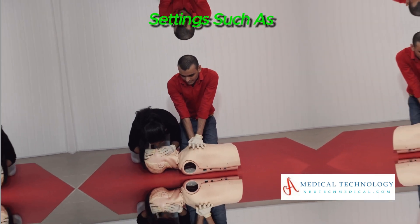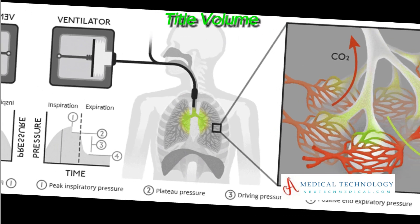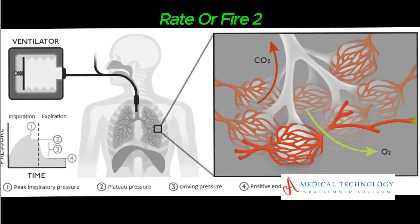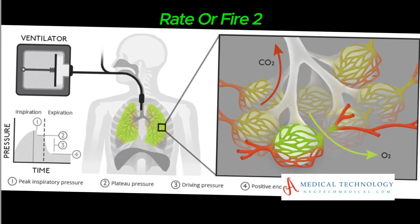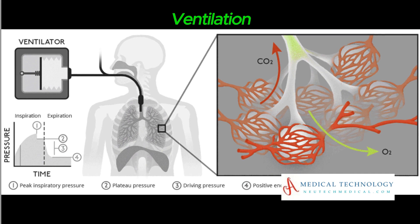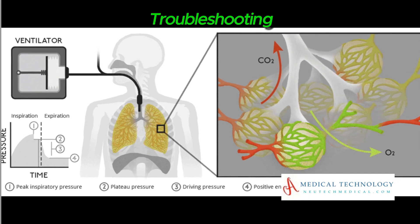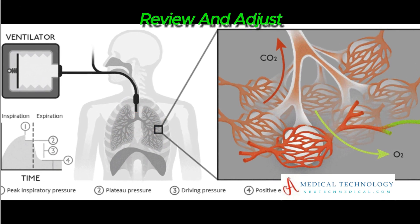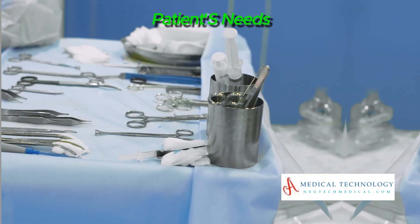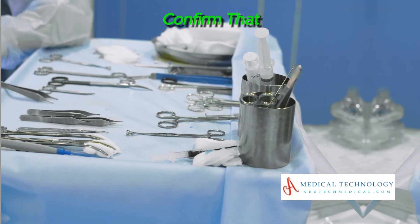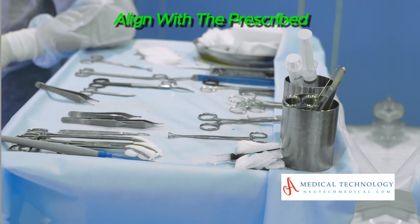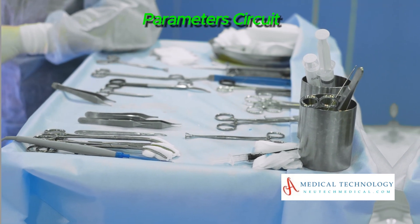Issue: Incorrect settings such as tidal volume, respiratory rate, or flow rate can compromise ventilation. Troubleshooting: Review and adjust ventilator settings based on the patient's needs. Confirm that the settings align with the prescribed parameters.